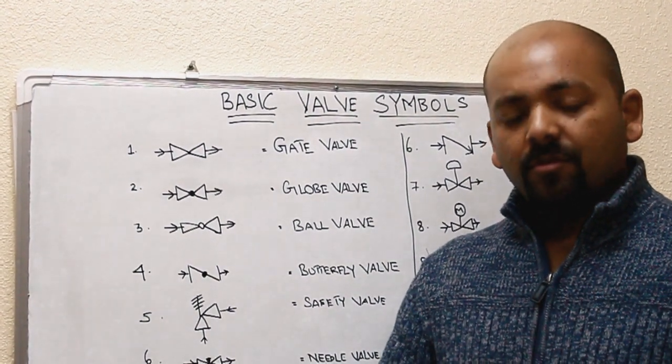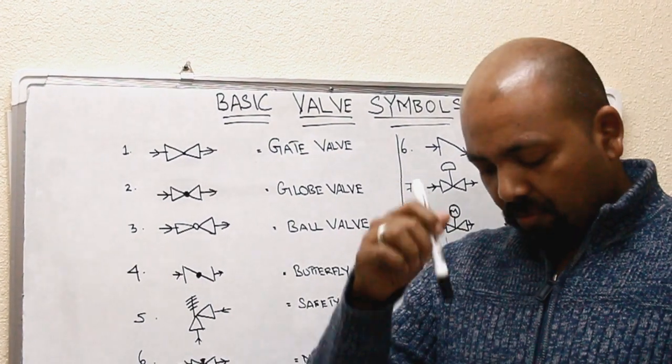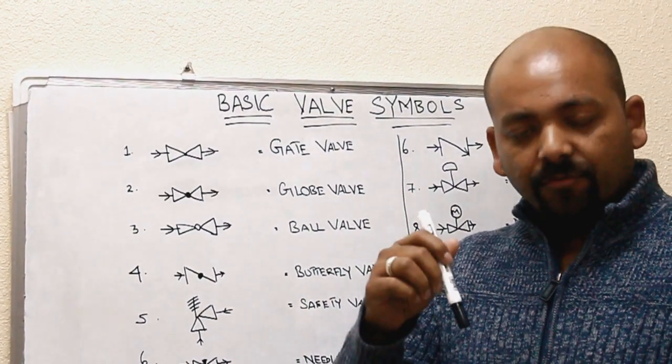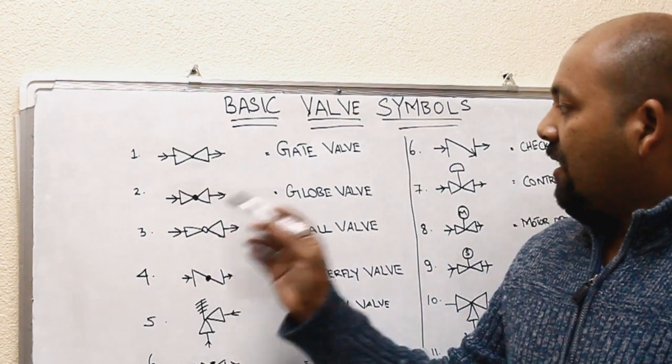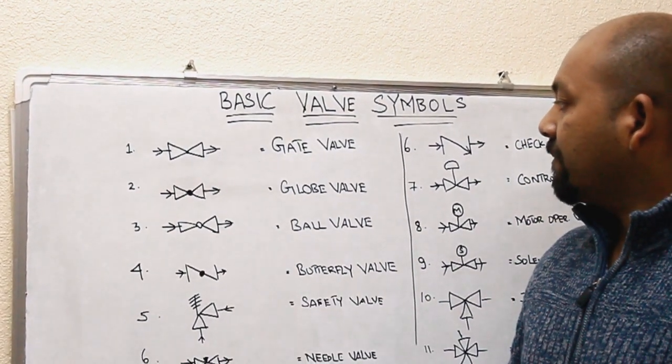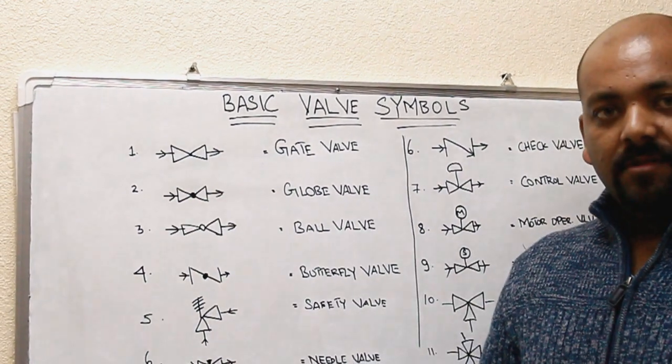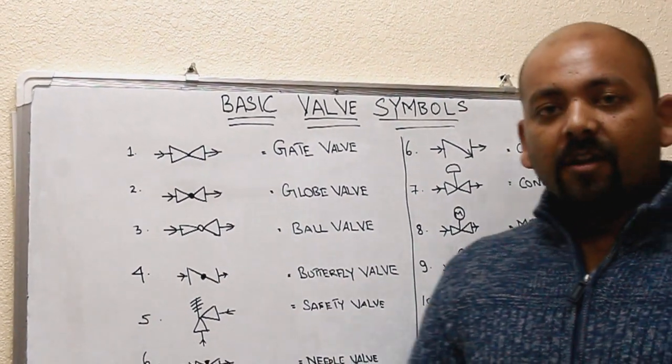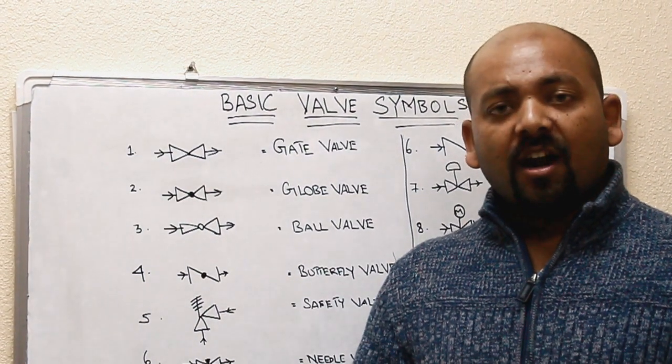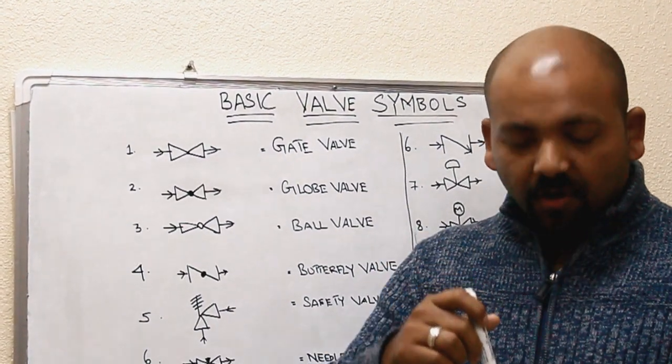And second one, the globe valve. The symbol of globe valve is like this. And here the globe valve is used to start, I mean open, and sometimes you can control the flow, and again you can isolate, you can close.